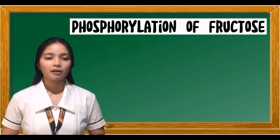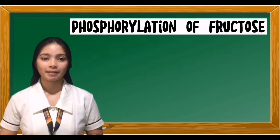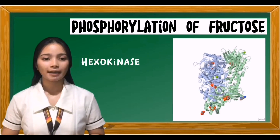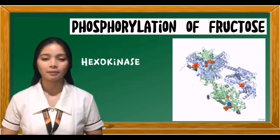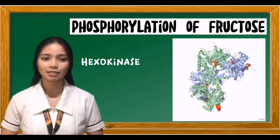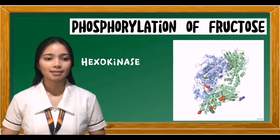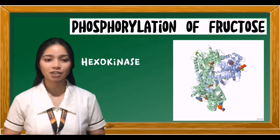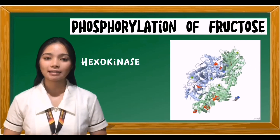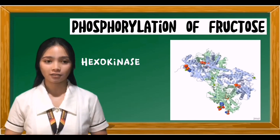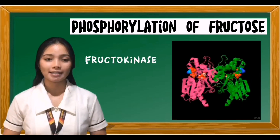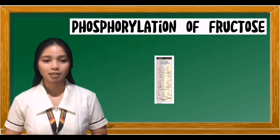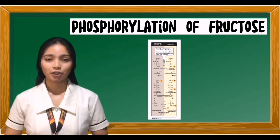For fructose to enter the pathways of intermediary metabolism, it must first be phosphorylated, accomplished by either hexokinase or fructokinase. Hexokinase phosphorylates glucose in most cells of the body, and several additional hexose sugars can serve as substrates for this enzyme. Unless the intracellular concentration of fructose becomes unusually high, the normal presence of saturating concentrations of glucose means that most fructose is converted to fructose 6-phosphate by hexokinase. Fructokinase provides the primary mechanism for fructose phosphorylation, and phosphorylation products of fructose and their cleavage is shown in Figure 12.2.